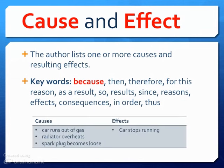Here's an example. Let's say you have these causes: your car runs out of gas, your radiator overheats, your spark plug becomes loose. All of these are things that could happen, and the result would be your car stops running — the effect. So here you have various causes and then one key effect. Sometimes you could have one cause and several effects, or sometimes the information might be focusing on just the causes.